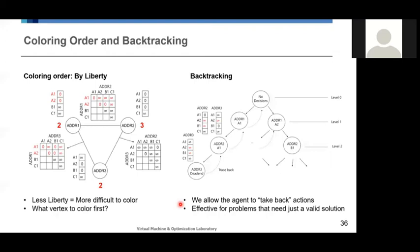And finally, we want to talk about the coloring order and backtracking. It is also important to decide what vertices to color first because we defined a new term called liberty by the number of options for each vertex that it can take. So if there is less liberty, there are only a few options that it can take. So it's much more difficult to color. So we will do the experiment with a random order and decreasing liberty order and increasing liberty order.